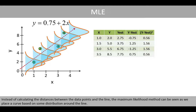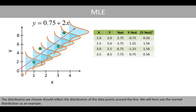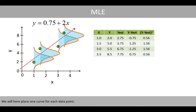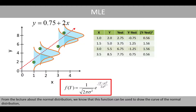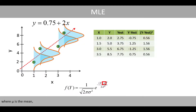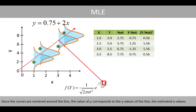Instead of calculating the distances between the data points and the line, the maximum likelihood method can be seen as placing a curve based on some distribution around the line. The distribution we choose should reflect the distribution of the data points around the line. We will here use the normal distribution as an example, placing one curve for each data point. From the lecture about the normal distribution, we know that a function can be used to draw the curve of the normal distribution. Since the curves are centered around the line, the value of mu corresponds to the y-value of the line — the estimated y-values.